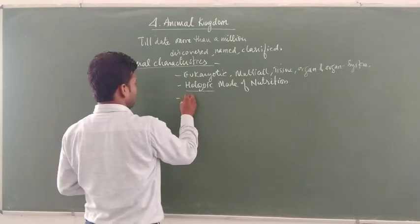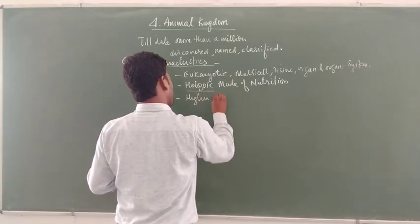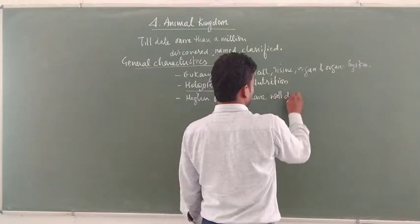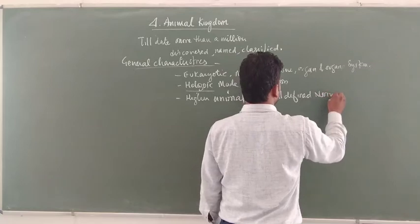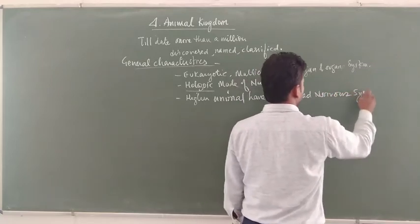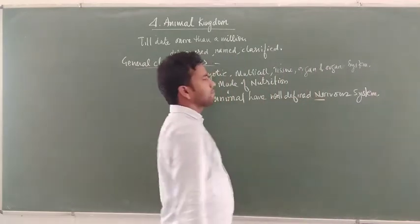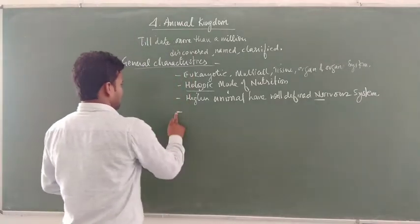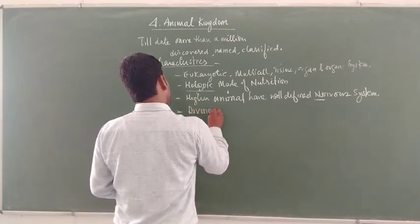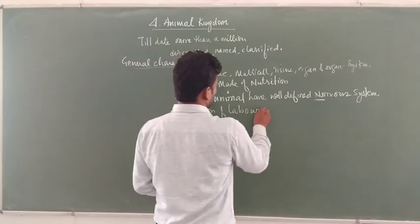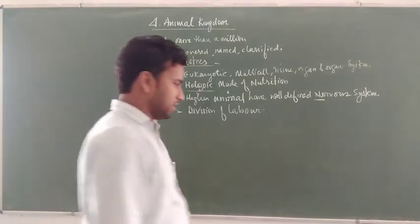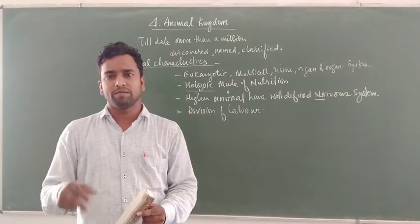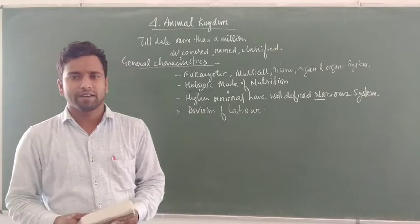Advanced animals have a well-defined nervous system. This type of system is not present in plants. Due to the presence of a nervous system, animals show more control and coordination compared to plants. Animals also show division of labour, which is more prominent than in plants. Other characteristics include locomotion; they may be sedentary, they may be parasitic, and many other modes of life can be considered.